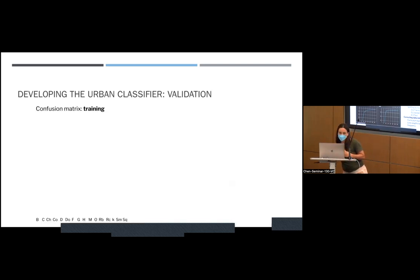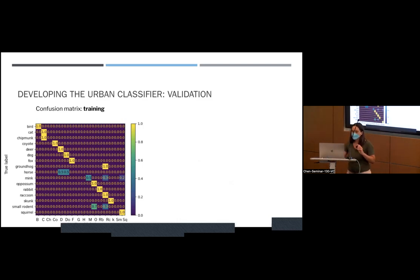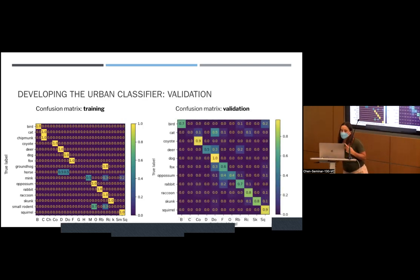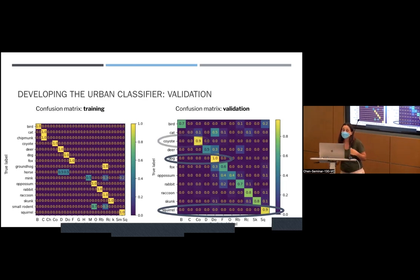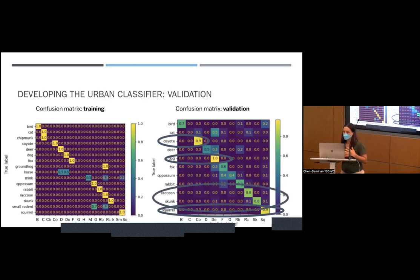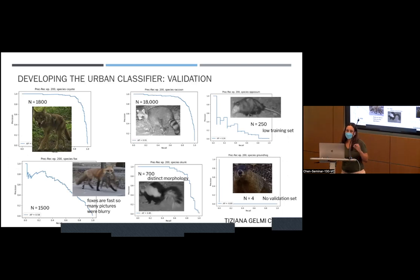The classes that had few pictures obviously performed differently, but the other ones were quite good in training. When we validated, we saw the same pattern — they were okay, around 80-70%. Dogs and squirrels were almost perfect, and coyotes were at 90% accuracy, which was quite good.